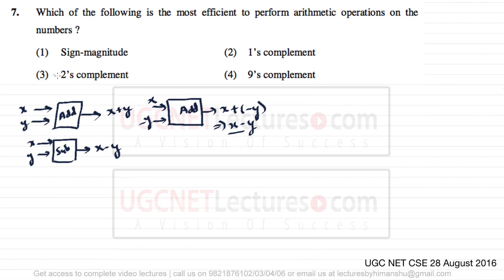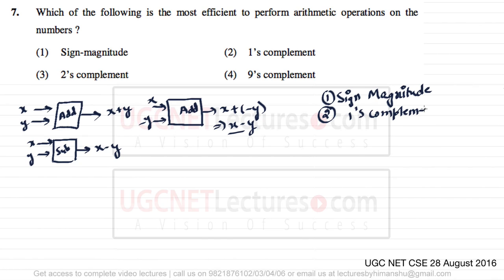For this purpose, we need to represent both positive and negative numbers. There are three ways to do this: number one is sign-magnitude representation, number two is one's complement representation, and number three is two's complement representation.